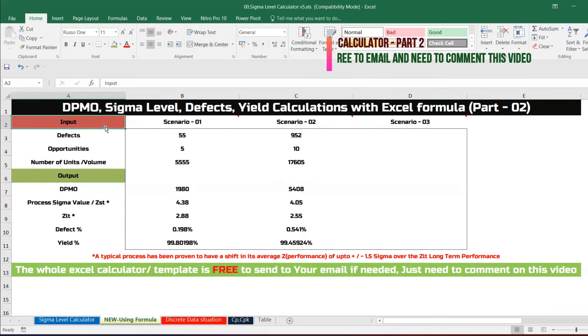There are two sections: one is the input section and output section. In input sections we have three attributes: number one defects, number two opportunities, number three number of units or volume.